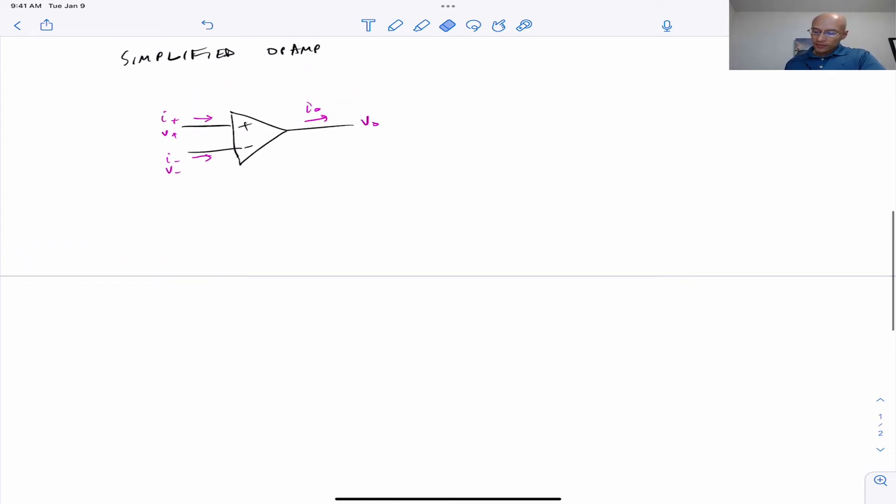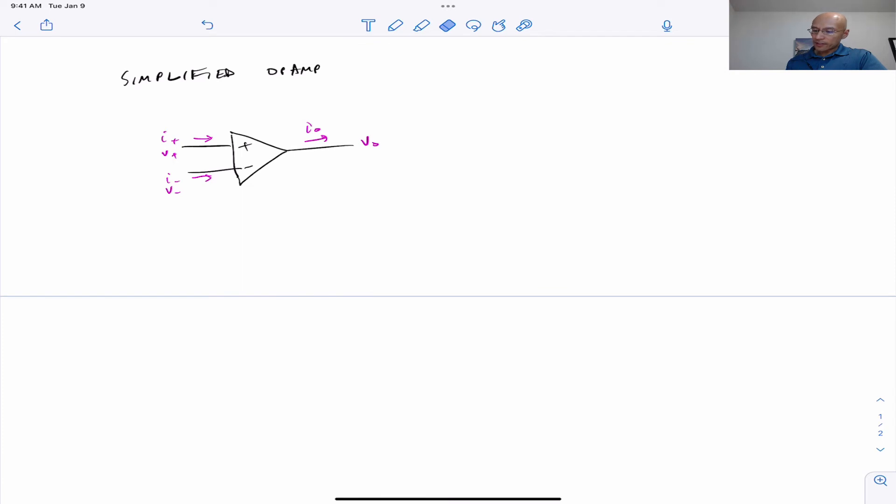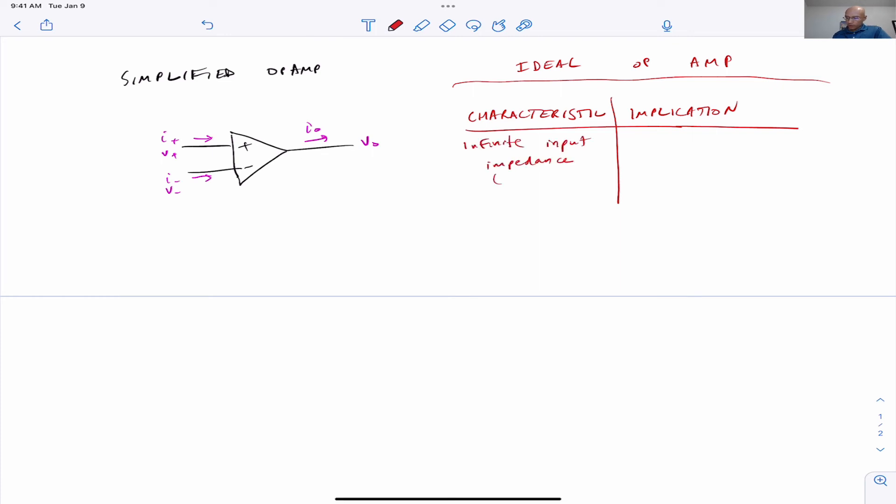One thing we need to discuss is the set of characteristics for an ideal operational amplifier. So I'll list a few characteristics that will help guide you through any problem that we do with these in a beginning treatment. The first characteristic is that of infinite input impedance. Or if I haven't introduced impedance to you yet, you can think of it as resistance. The implication for this is that no current can enter the device. So we'll write here I plus is equal to zero and that's equal to I minus.